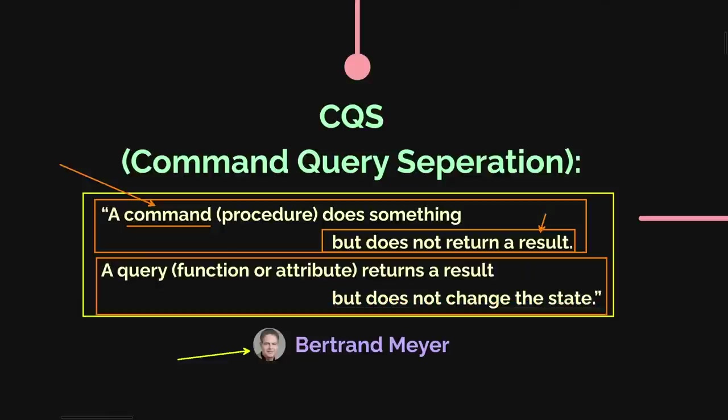The other kind of methods do return a value — they ask a question — but if so, they must be pure and they're not allowed to change the state of any object.